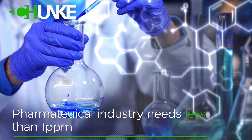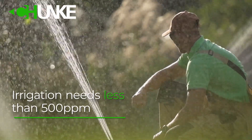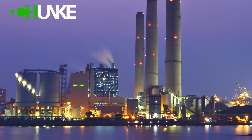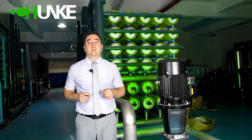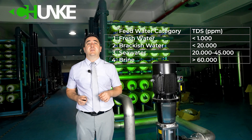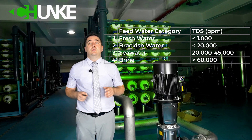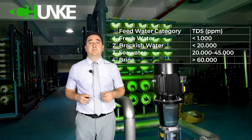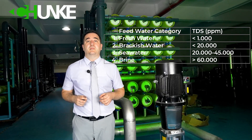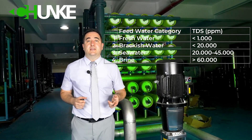Every industry has different demands — for example, the pharmaceutical industry needs water less than 1 ppm, irrigation needs less than 500 ppm, and power plants need less than 2 ppm. If you are not sure which TDS level is suitable for your process, don't worry — our technical team will help you. The second table categorizes water by source. Our sample test report shows a TDS level of 3580 ppm, which means it is brackish water. If TDS is higher than 2000 ppm, your system needs higher pressure, a bigger pump, special membranes, and other technical improvements. Therefore, TDS is a very important parameter for both you and us to design a correct system.